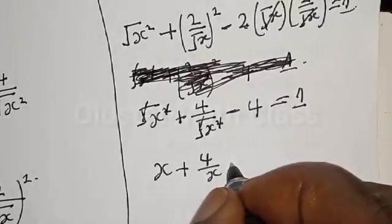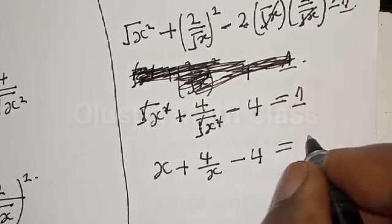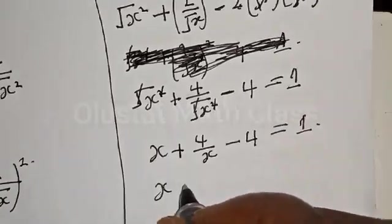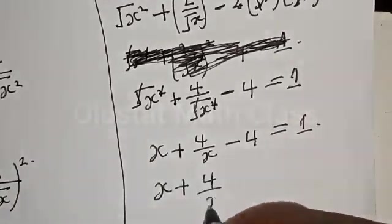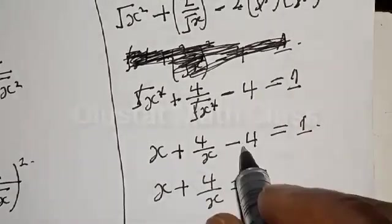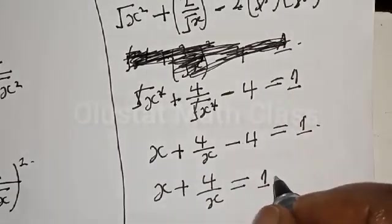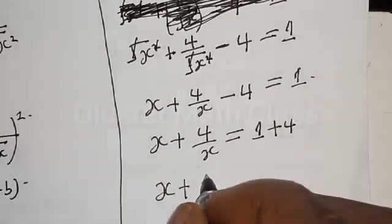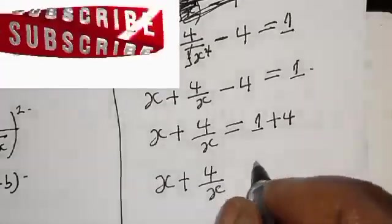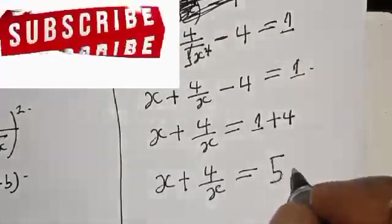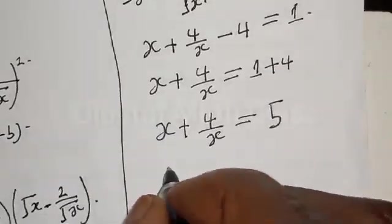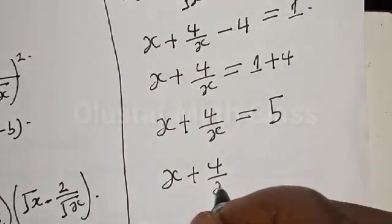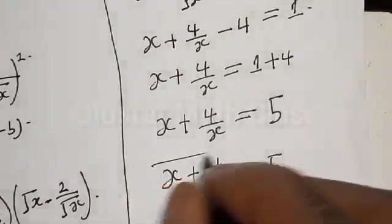This gives us s minus 4 equal to 1. Moving the minus 4 across, it becomes plus 4, so we have s plus 4 divided by s equal to 1 plus 4, which is 5. Therefore our final answer is s plus 4 divided by s equals 5.